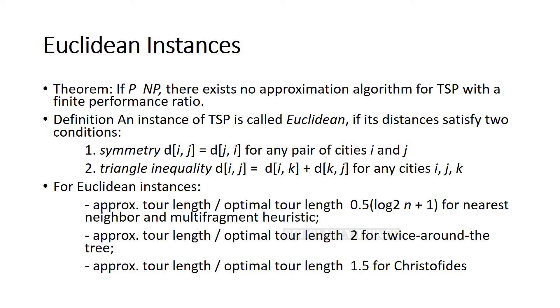Euclidean instances. An instance of TSP is called Euclidean if its distances satisfy two conditions. The first one is symmetry, that is d(i,j) is equal to d(j,i) for any pair of cities i and j. The other one is triangle inequality: d(i,j) is less than or equal to d(i,k) plus d(k,j) for any cities i, j, k.